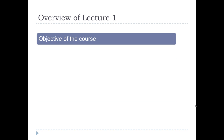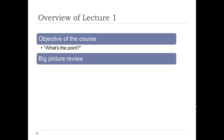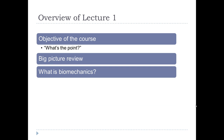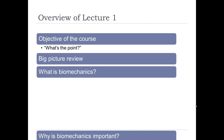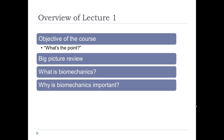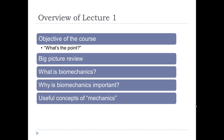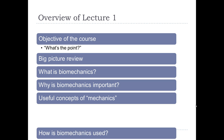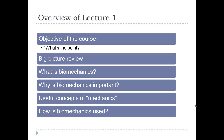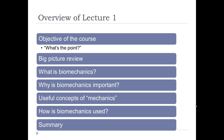So what's the overview of lecture one? First we're going to look at the objective of the course — what's the point. Next we're going to talk about the big picture review, then what is biomechanics, why is biomechanics so important, the useful concepts of mechanics, how is biomechanics used, and then we're going to summarize all the points.